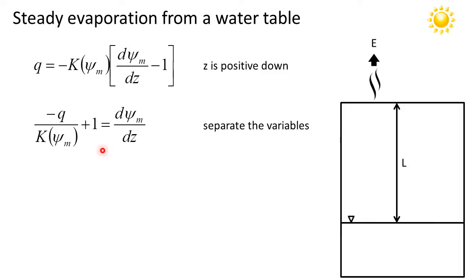Algebraically we can just rearrange this equation to get dψ_m/dz by itself on the right-hand side, and then we can separate the variables so that we'll be able to perform an integration. We separate the variables; now we have dz on the left-hand side and we have dψ_m on the right-hand side, and before we can proceed further we'll have to define the unsaturated hydraulic conductivity function.